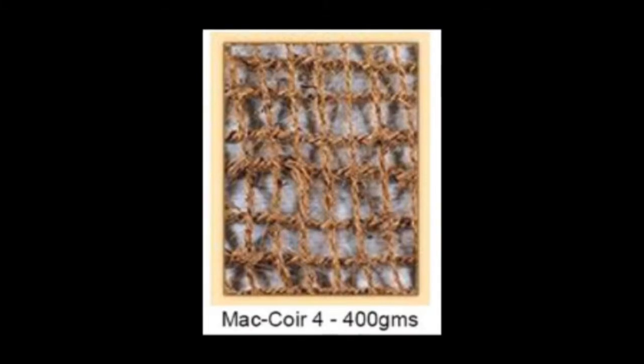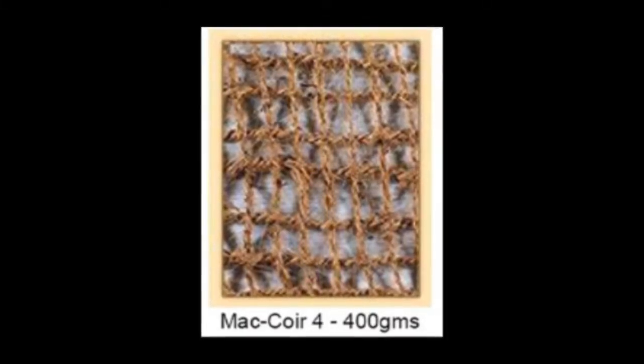If we look at the different product types available, we can see the variation in fibre and manufacturing techniques. This is a coconut fibre blanket. The fibres are laid randomly and contained within a loose net. This is also coconut fibre but is woven into an open mesh.